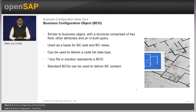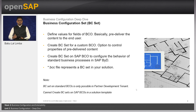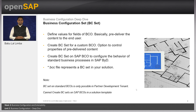A BCO is represented by a file extension dot BCO in the solution. A BC set is used to define the values for the attributes of a BCO, and these values become part of the pre-delivered content to end users. You can create BC sets on custom BCOs to deliver the content, and while defining the content you can also control the properties by allowing or restricting end users to delete or add additional values.